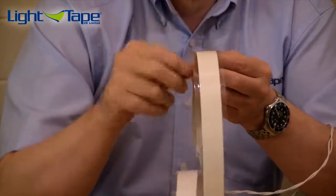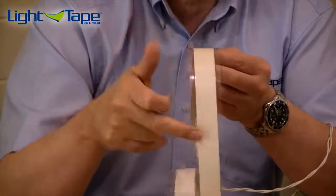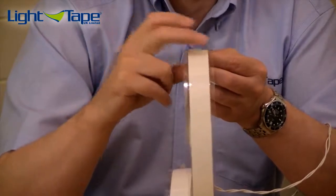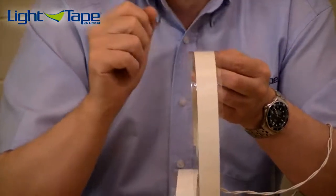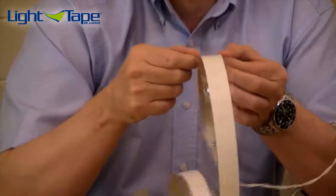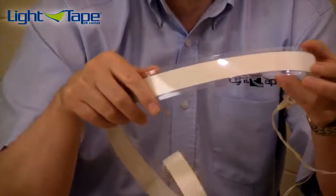And as you can see on the edges there, we've got some encapsulation. Now, this is a Honeywell encapsulation. And we've actually encapsulated it by about a quarter inch either side of the light tape, which gives it some protection and gives the product some rigidity.